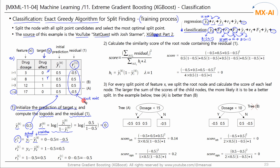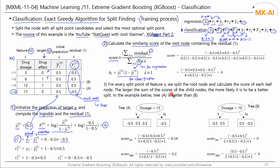The root node contains the residuals and is split into child nodes to create a tree. Step 2 calculates the similarity score for the root node. The formula for calculating the score is as follows. The numerator is the square of the sum of the residuals. For regression, H is 1. However, in classification, H is defined differently. The lambda is a regularization constant, and here lambda is set to 1.